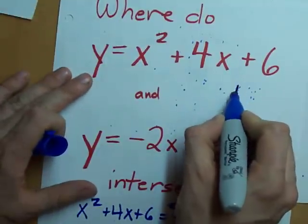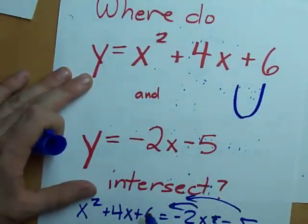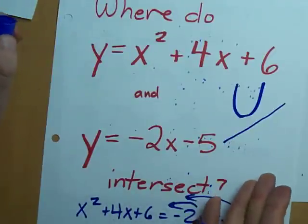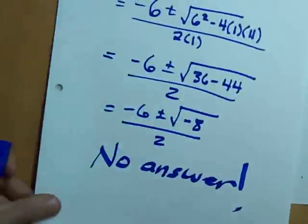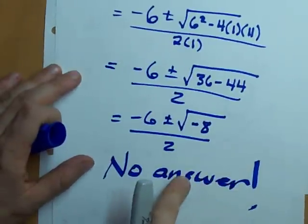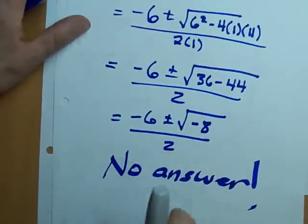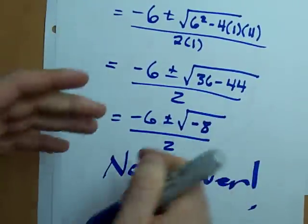This is a parabola. Maybe it looks like that. And the line, maybe it looks like that. They clearly don't intersect. That could be what it looks like. I don't know. All I know is that they don't intersect. Because when I set the two equations equal to each other, I didn't get an answer. That's how easy it is sometimes.